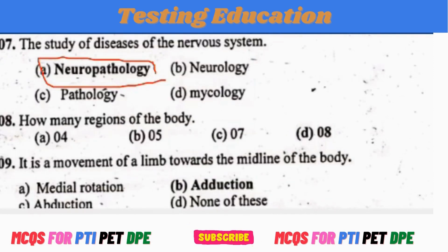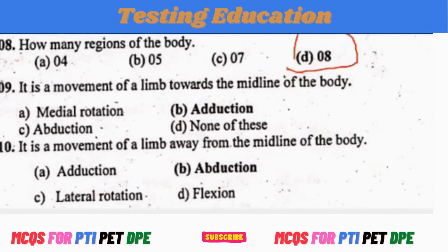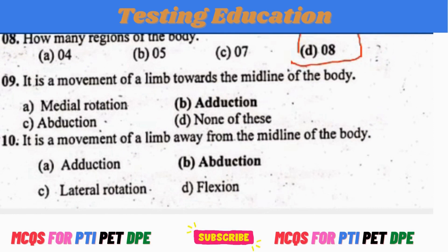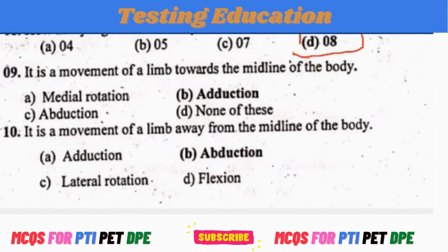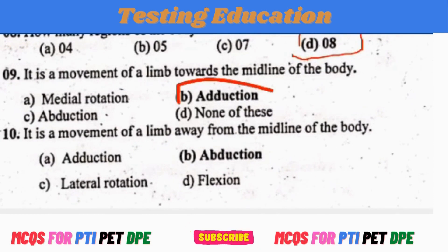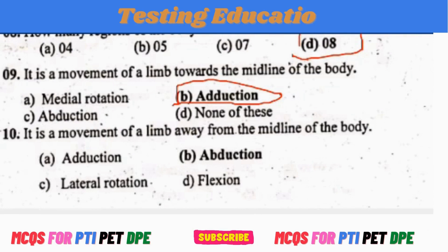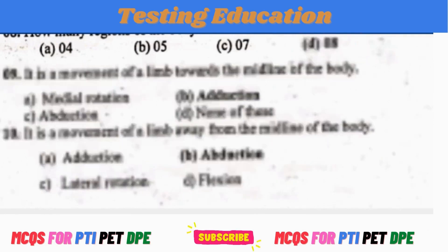How many regions of the body are there? Adduction is the movement of a limb toward the midline of the body. Abduction is the movement of a limb away from the midline of the body.